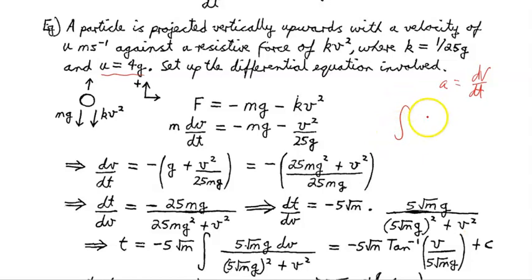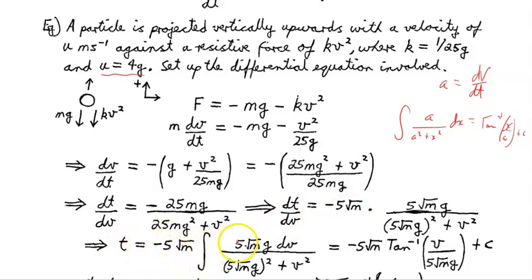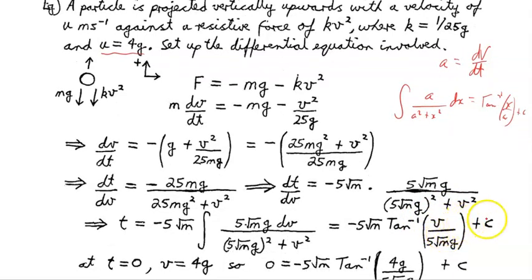Separating the differentials and integrating the left side gives t equals minus 5 root m times inverse tan(v on 5 root m times g) plus C. Here a equals 5 root m times g and x equals v, matching the inverse tan form. So we have an expression for the time of the object given its velocity at any particular moment.